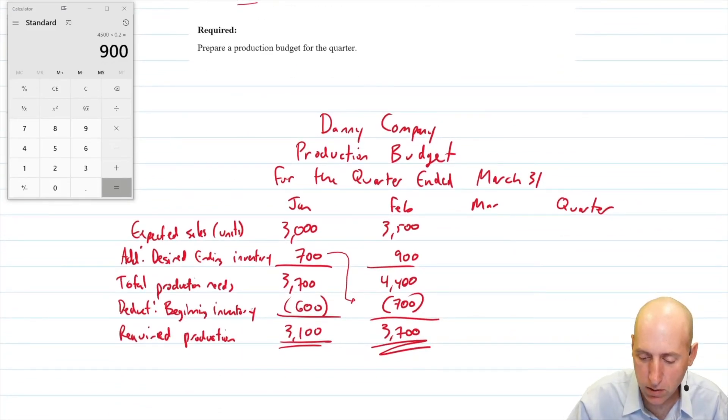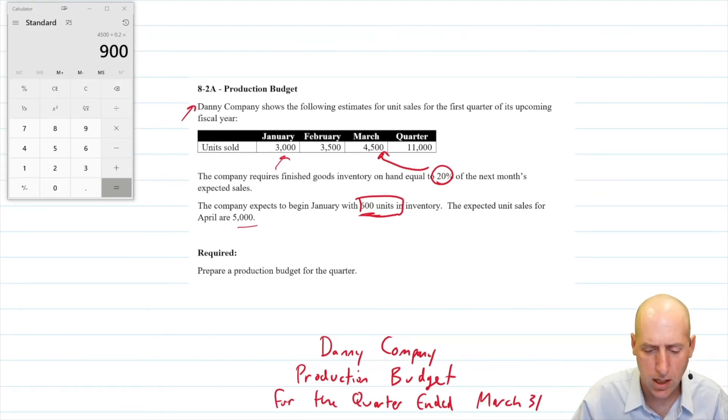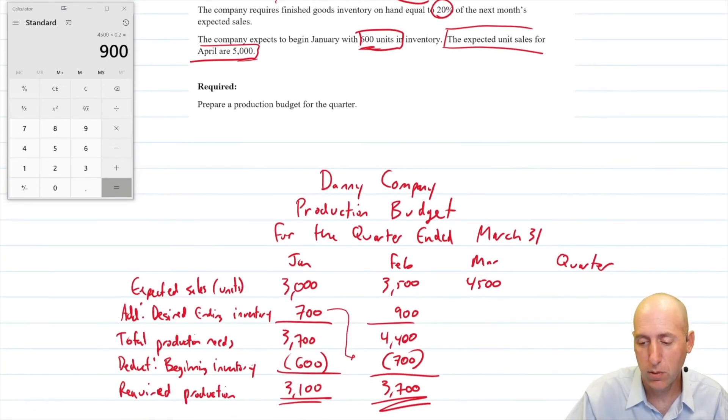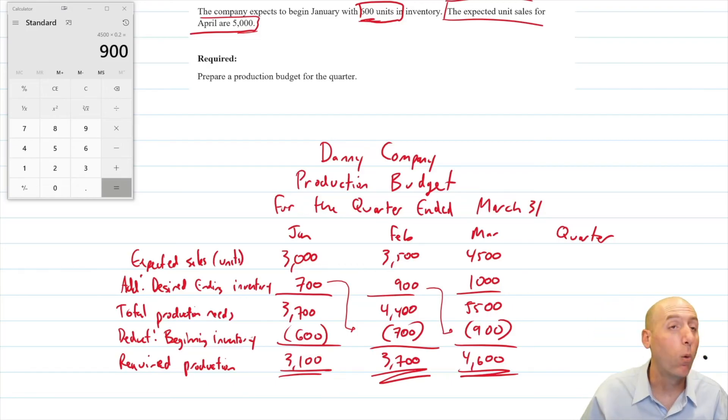March, it's 4500 units. My desired ending inventory for March. Oh no, I don't see anything about that. But I was wondering why they had this sentence at the bottom. The expected unit sales for April are 5000. Okay, well, then at the end of March, I want to have 20% of April. 20% of 5000 is 1000. 4500 plus 1000 is 5500. Our beginning inventory was 900. I don't need to make those. 5500 minus 900 is 4600 units. So we've done a wonderful job so far.